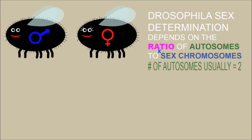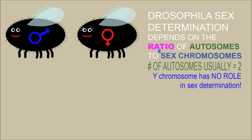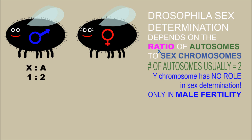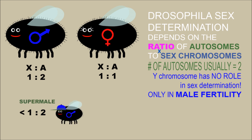Usually there are two autosomes, though this can vary. The Y chromosome is useless apart from making male flies fertile. If you have a ratio of one X chromosome for every two autosomes, you produce a male. If you have an equal number of X chromosomes versus autosomes, you get a female fruit fly. If your ratio is less than one X per two autosomes, you get a super male — basically a fly with exaggerated male characteristics. More than one X chromosome per autosome will give you a super female, or a fly with exaggerated female characteristics.